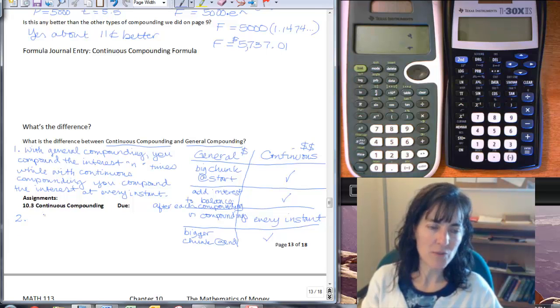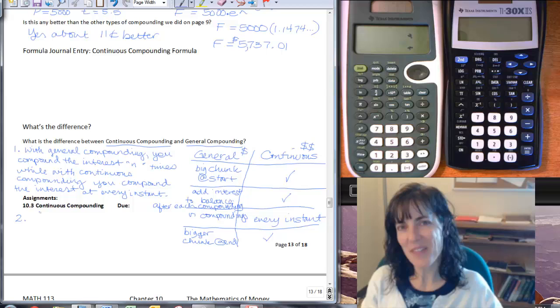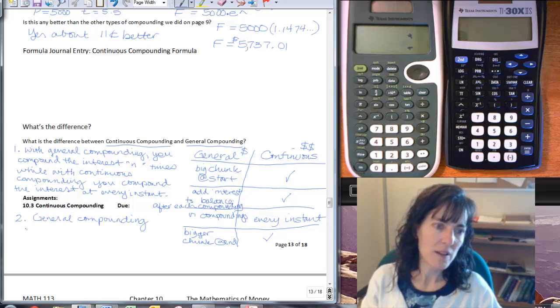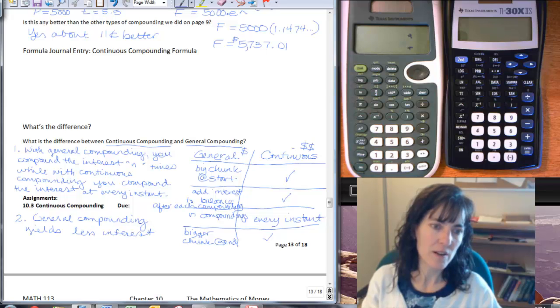And then a second minor, well I mean it's minor but it's not the crux of the matter I guess is what I'm trying to say. Okay, but general compounding yields less interest than continuous compounding.